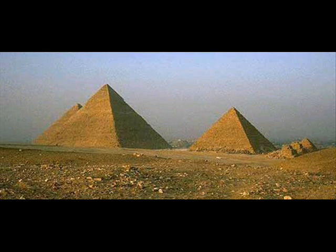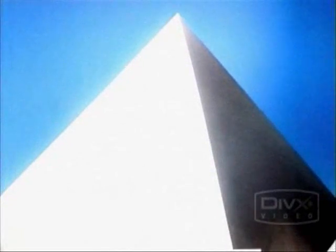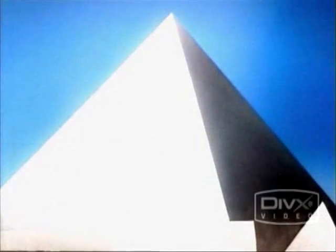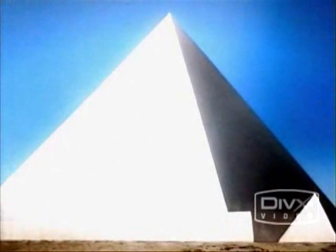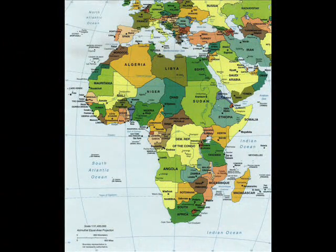The Great Pyramids. For years, scientists have studied these great marvels of architecture. And through the years, there has been conjecture as to the date and who is responsible for the construction of these great wonders of the world. The Great Pyramids are located in the continent of Africa, in Egypt, in the great Nile Valley.